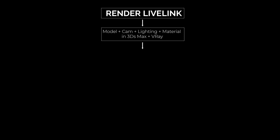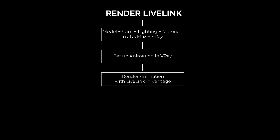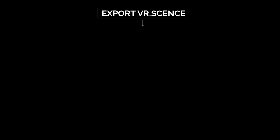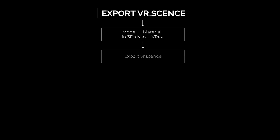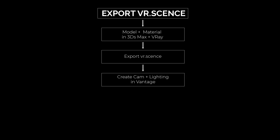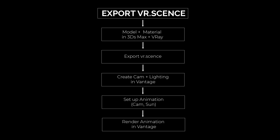After that, we will use the live V-Ray to set up the animation and render it with the lighting feature in Chaos Vantage. In the second workflow, we only need to focus on modeling and material in 3ds Max. Then we can export via V-Ray Sync and create the camera lighting directly in Vantage. This workflow is great for rendering still images, but when it comes to animation, there are some limitations, which I will discuss in detail later.